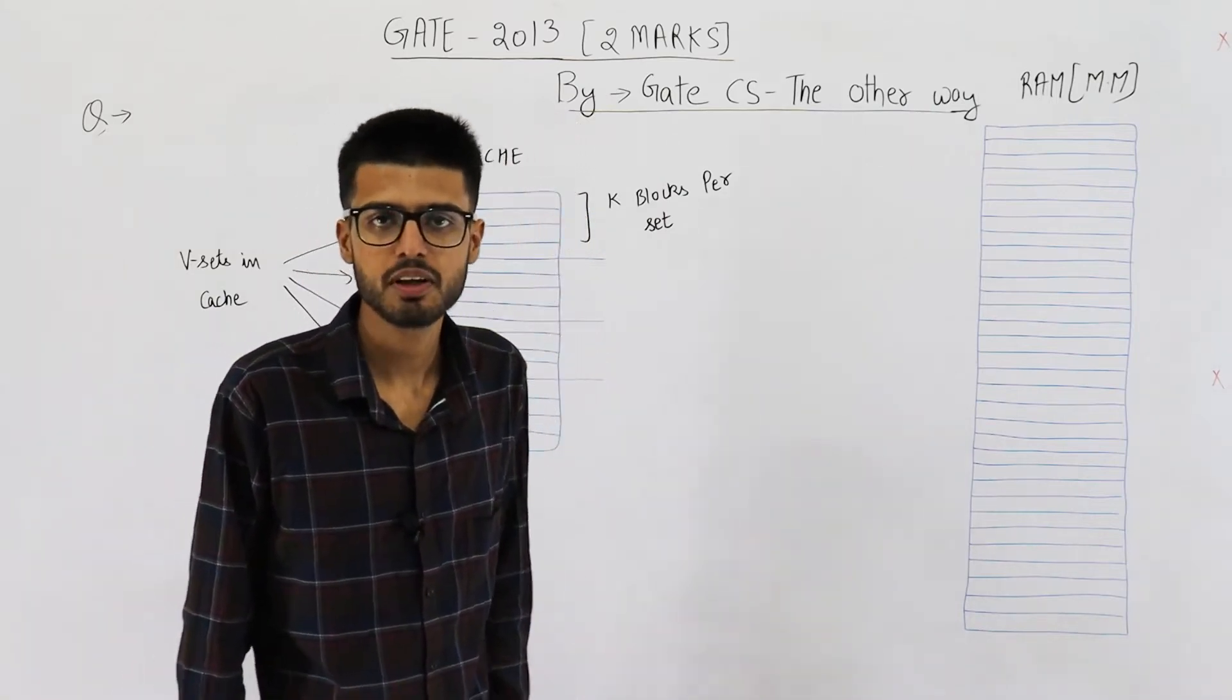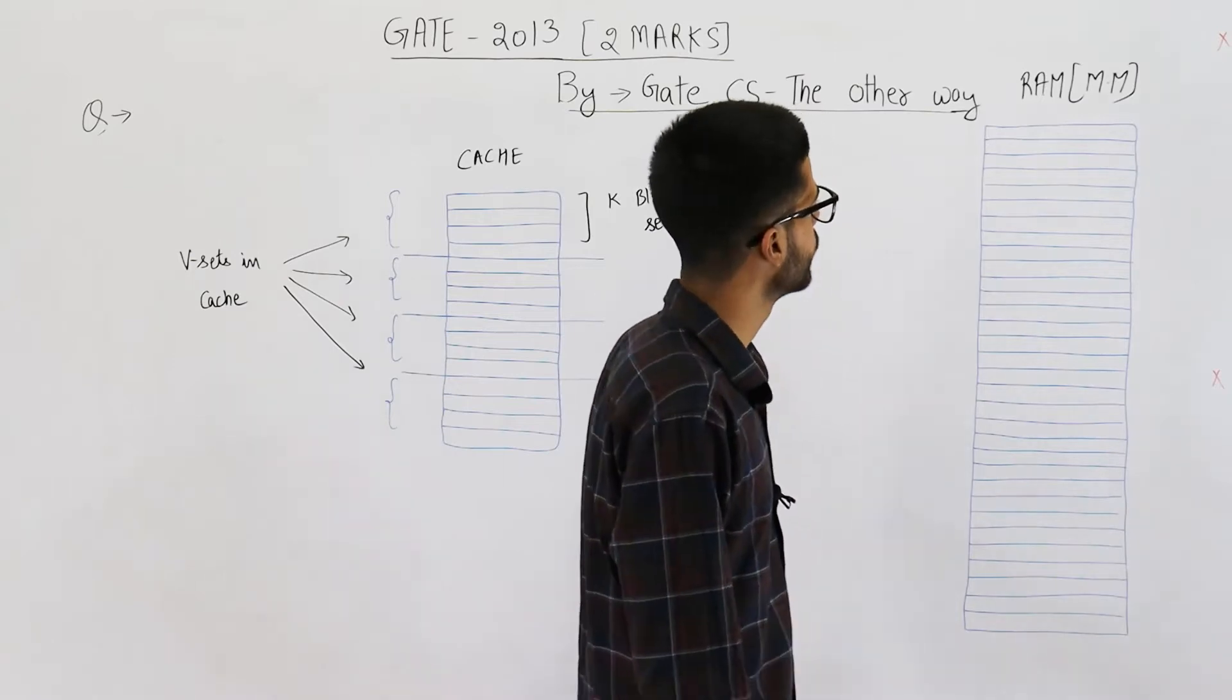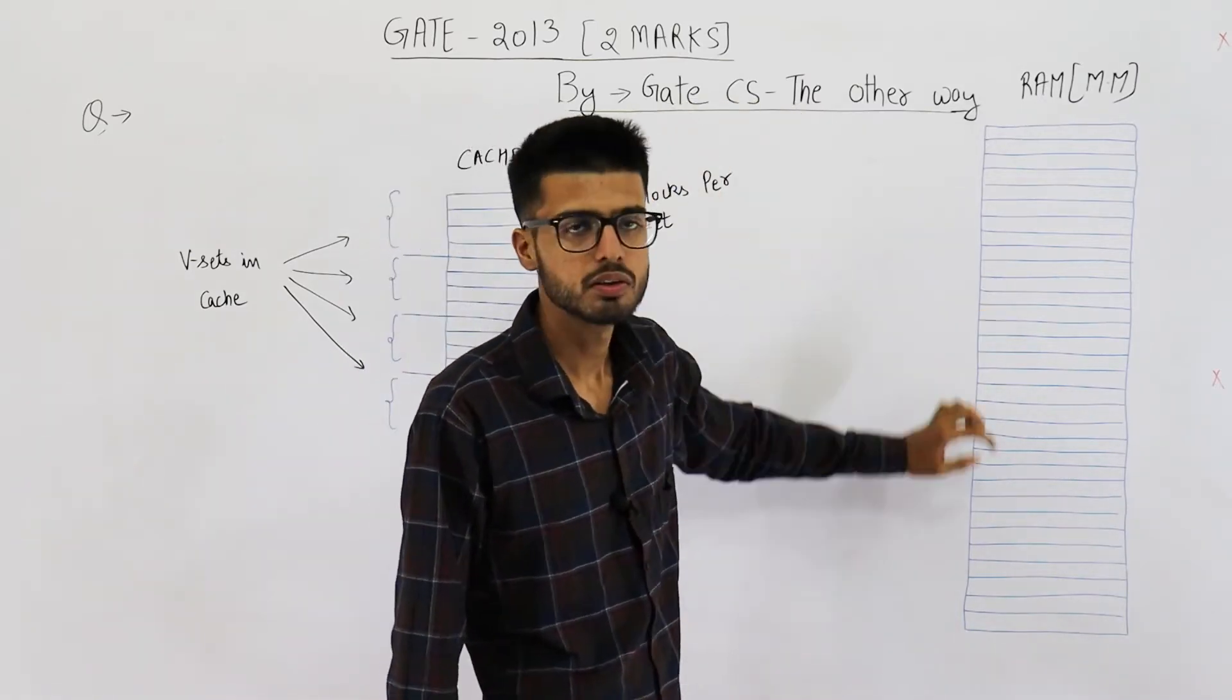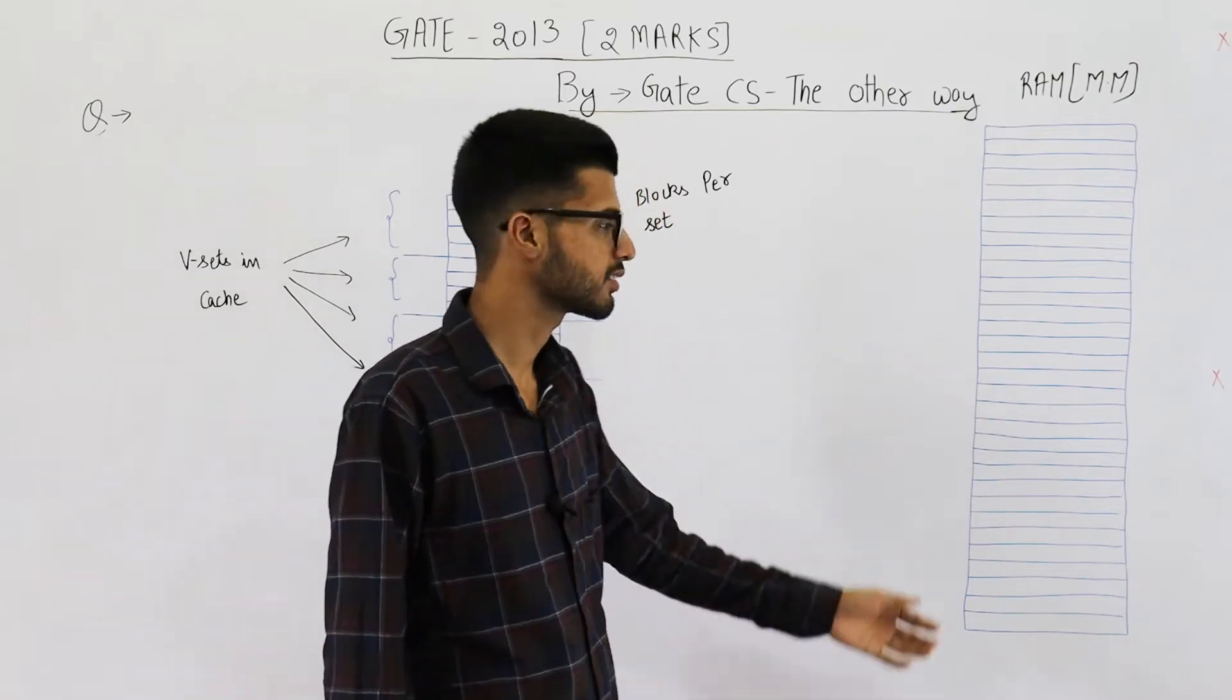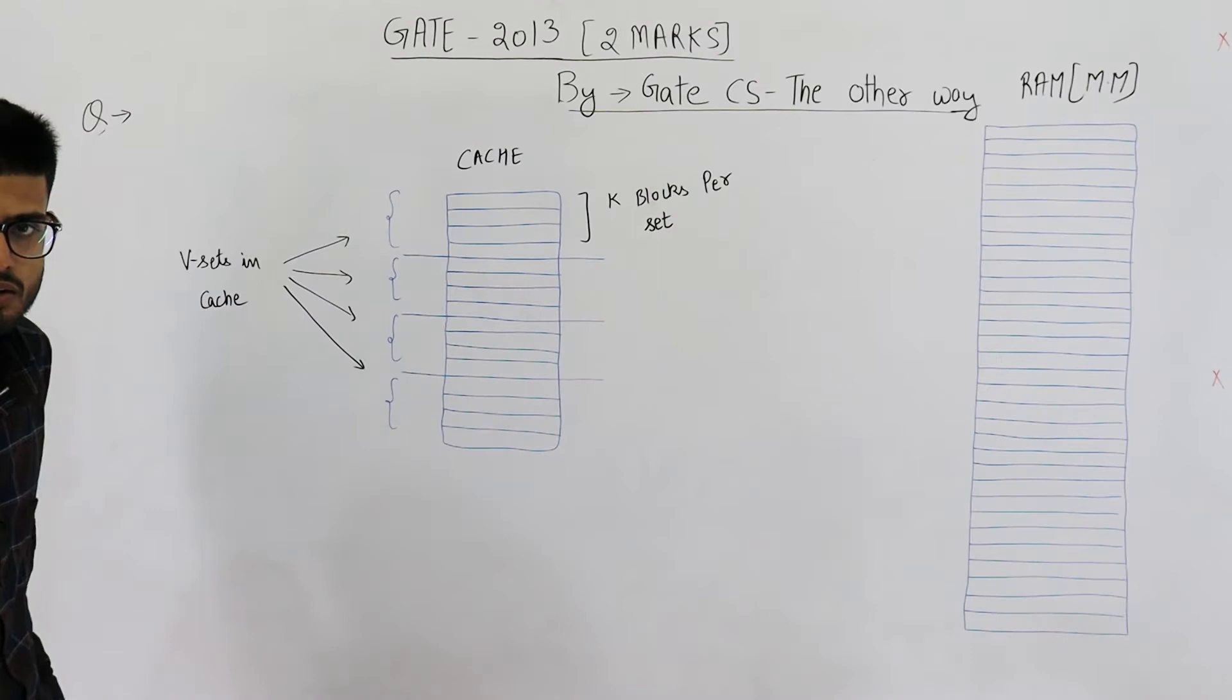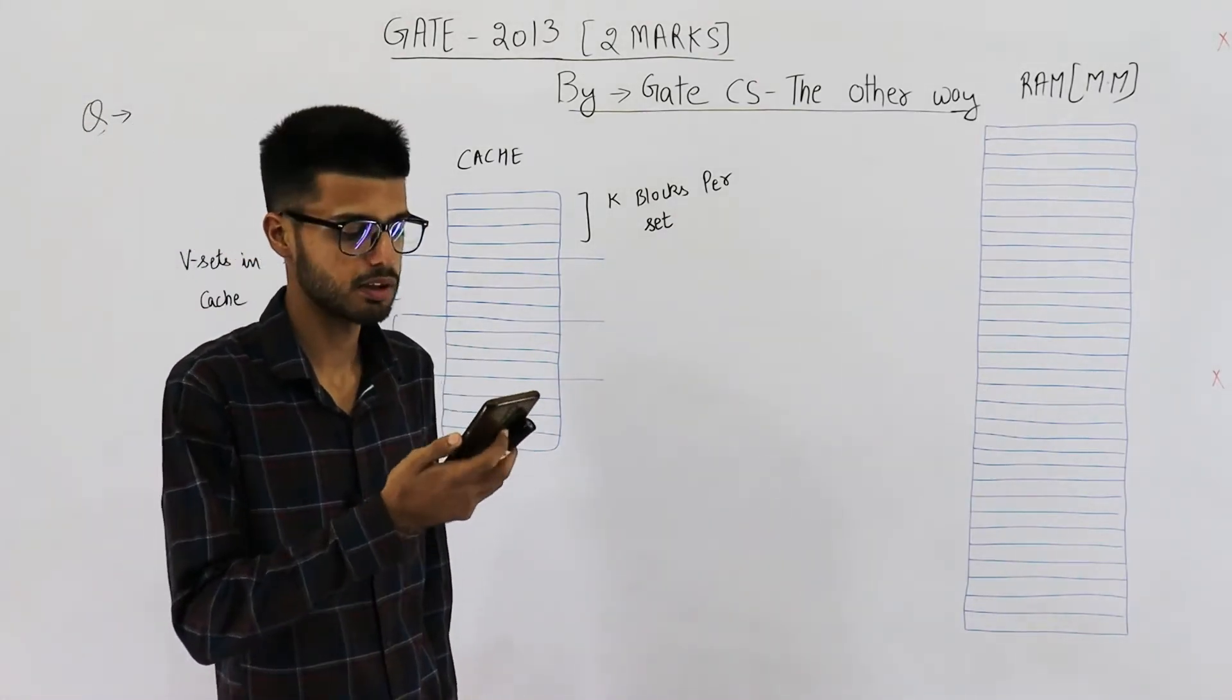Hi students, this question is from GATE 2013 exam. It's a two marks question where you are required to find out where a particular block from main memory gets mapped onto the cache in case of k-way set associative mapping. So first of all let me read the entire question then we'll solve it.